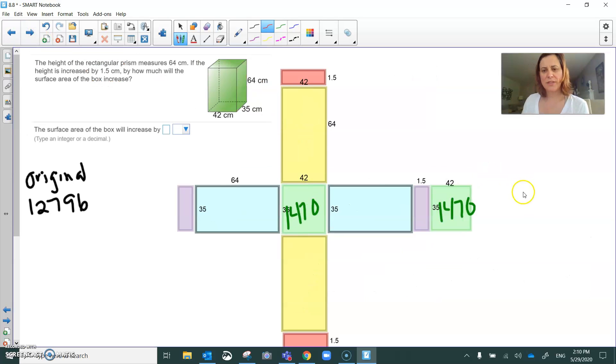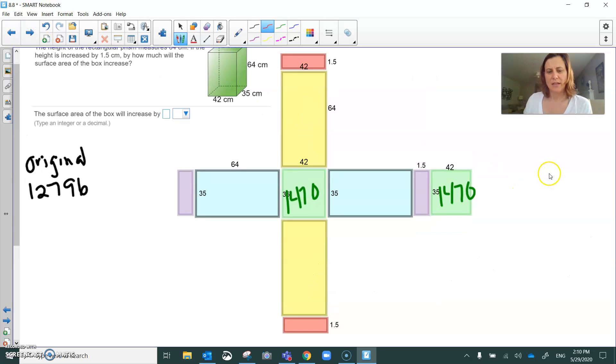So this is what the new figure would look like. So notice the bottom and the top aren't getting impacted at all. It's just each of the sides that used to be 64 are now 64 plus 1.5. And 64 plus 1.5 is 65.5. So now those yellow areas and those blue areas are going to have 65.5 as the height.